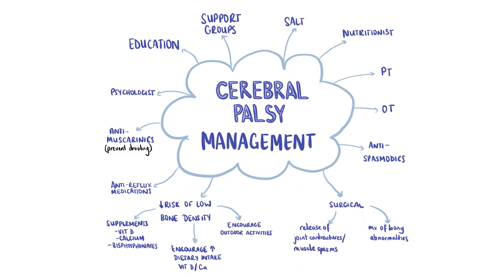CP is a lifelong condition with great impact on the patient, their families, and their carers. It's essential that children and young people with cerebral palsy and their parents or carers have a central role in decision making and care planning. Education is essential for all involved in the patient's care. Support groups can be greatly beneficial, so signpost to local agencies and carers organisations. An MDT approach is important to ensure optimum care on a case-by-case basis. Special needs education and vocational training can help CP patients to live fulfilling lives. Medications can help relieve symptoms — for example, antimuscarinics such as glycopyrronium bromide prevent drooling.